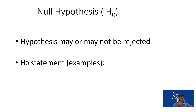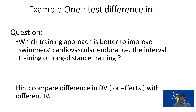Hypotheses may or may not be rejected. Here we have a test difference example: which training approach is better to improve swimmers' cardiovascular endurance — interval training or long distance training? Thinking back to independent and dependent variables, the training type is our independent variable and cardiovascular endurance is our dependent variable. We're changing training type and measuring endurance.